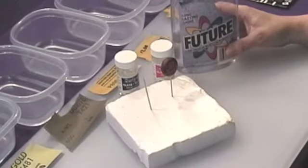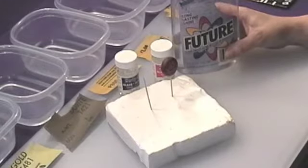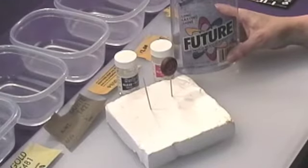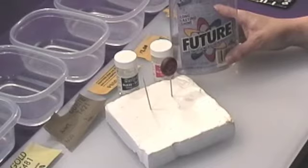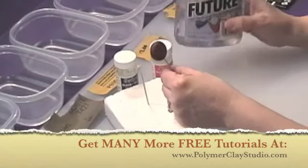Another great thing is polyurethane, a common brand, it used to be called Flecto Varathane, but it's now made by Rustoleum. So you might want to go to a hardware store and look for Rustoleum Diamond Varathane. It's a great finish for this kind of thing, it's like future.